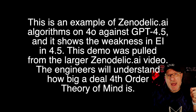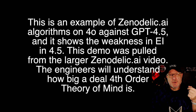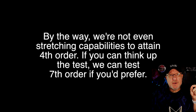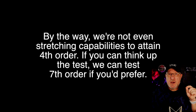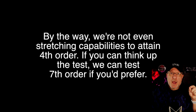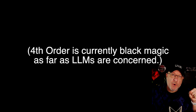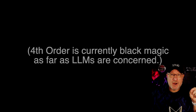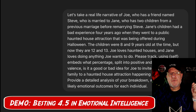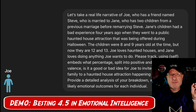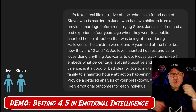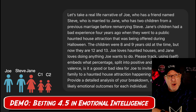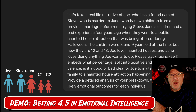Let's show you some black magic as far as you guys are concerned. Let's jump into a live demo of how a top-tier LLM can take a realistic life scenario and process through some multi-hop fourth-order theory of mind analysis, which isn't even on anyone's radar yet. Let's take a real-life narrative of Joe who has a friend named Steve who is married to Jane, who has two children from a previous marriage before remarrying Steve.